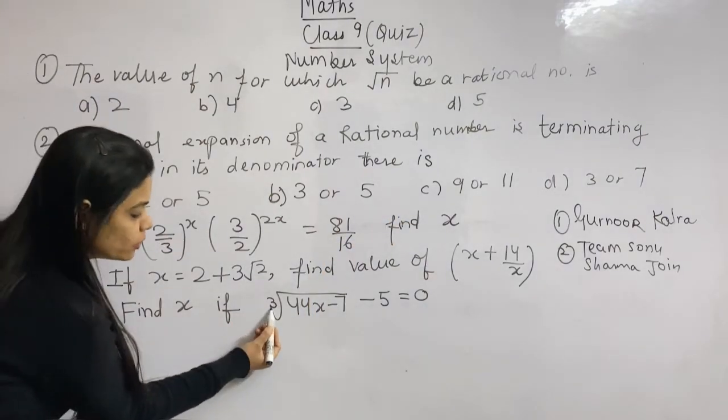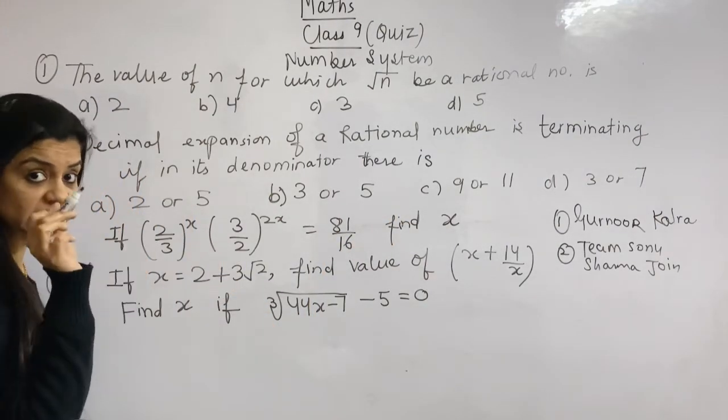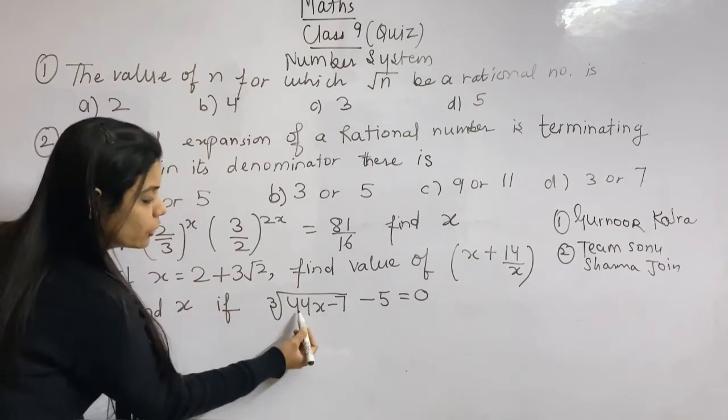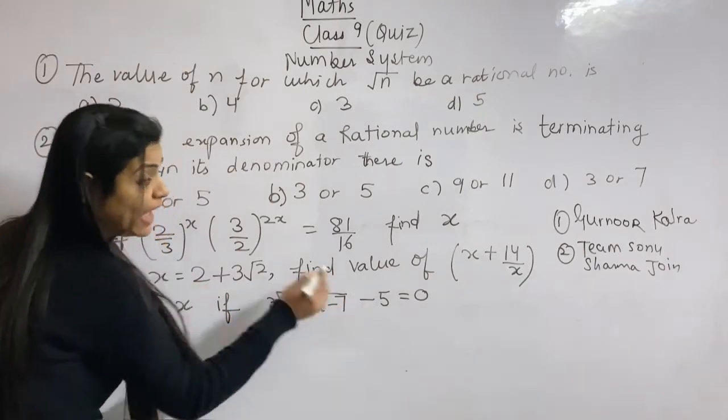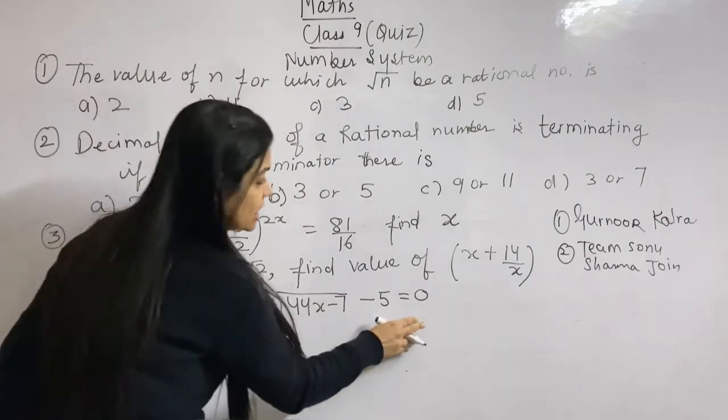All right. And this one is cube root. Cube root. Third. Cube root of only this part, five is not included. Okay. Is equal to zero.